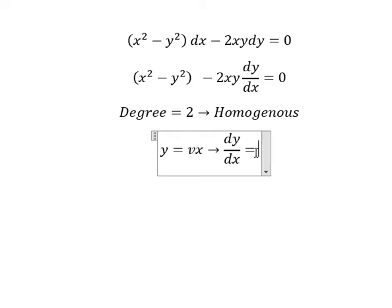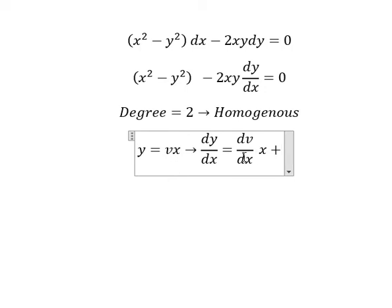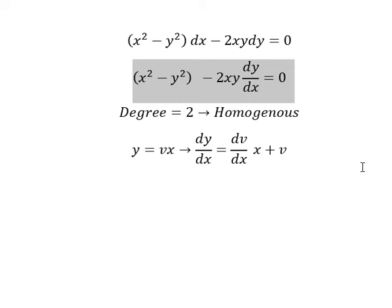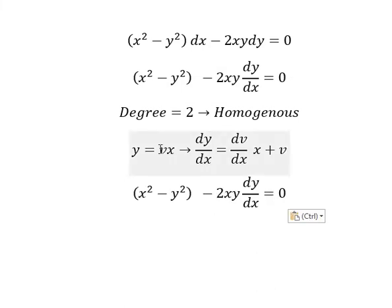We differentiate v first: we have dv/dx multiplied by x, plus we differentiate x and get 1, so we have v. This is the product rule.